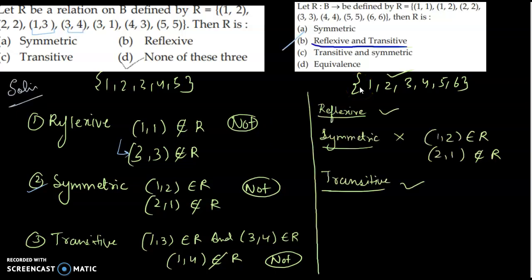In this case it is reflexive and transitive. For reflexive: (1,1), (2,2), (3,3), (4,4), (5,5), (6,6) are all there. For symmetric: (1,2) belongs to R but (2,1) does not — not symmetric. For transitive: checking (1,2) and (2,2) gives (1,2), which is in the set. So it is reflexive and transitive but not symmetric.